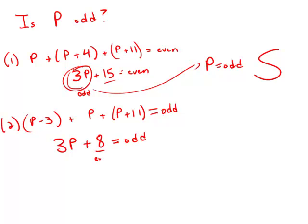Well, of course, 8 is even. And the only way we're going to get an odd, again, is by doing odd plus even to get odd, because even plus even would be even. So that means that 3p must be odd. Well, 3p is odd. Again, what that means is that p is odd.